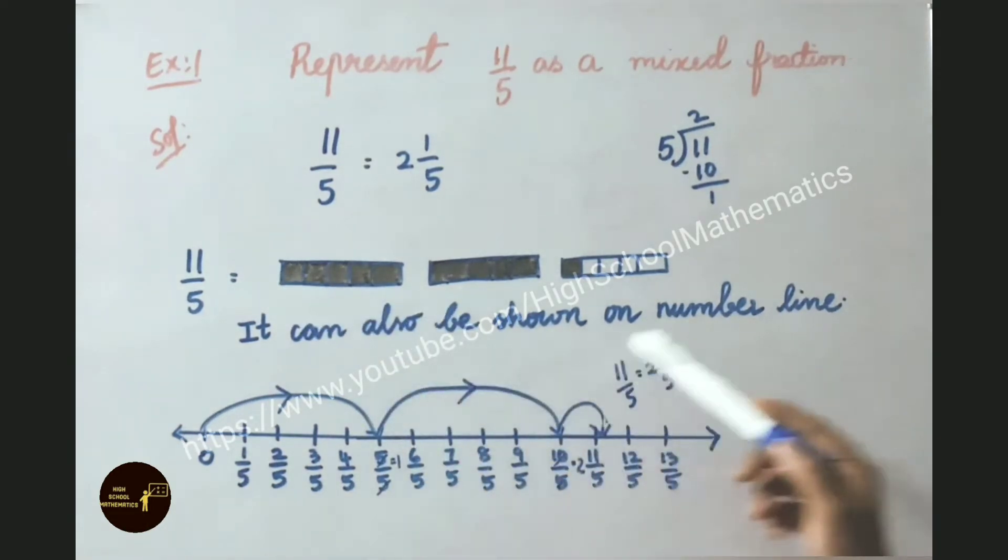So 11 by 5 can also be shown on a number line. See the number line here: 0, 1 by 5, 2 by 5 so on up to 13 by 5. We just represented on this number line. First we have shown 1, 0 to 1. 5 by 5 means 5 table: 5 ones are 5. So 0 onwards 5 by 5 we marked. Then after 5 by 5 onwards 10 by 5 we marked again. So 5 by 5 means 1, 10 by 5 means 5 table, 10 is 2 times.